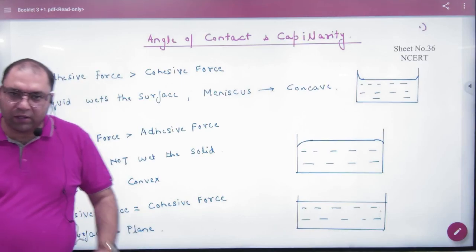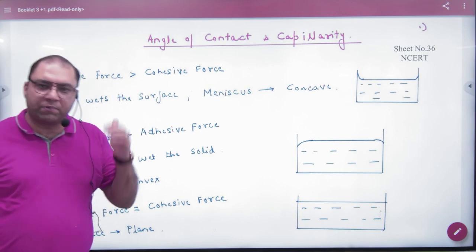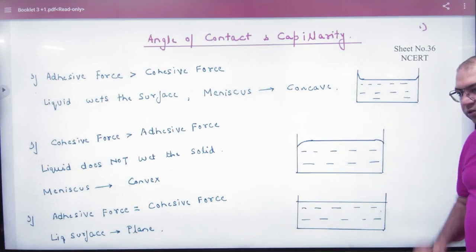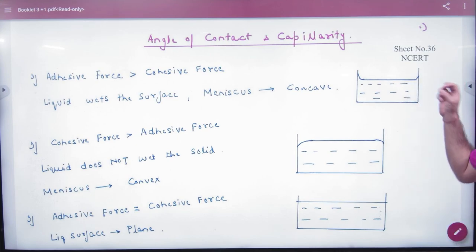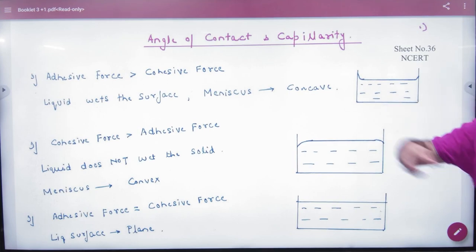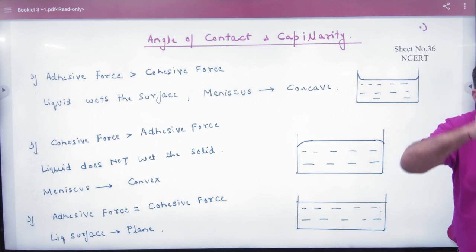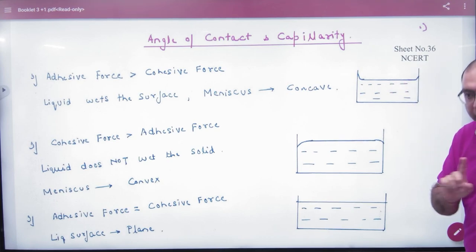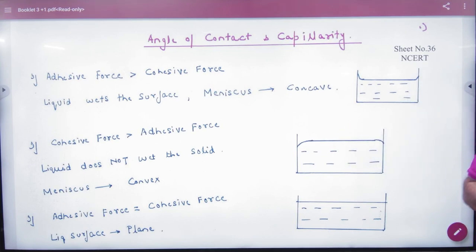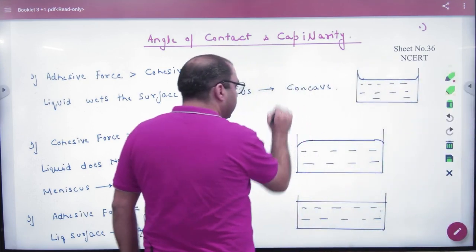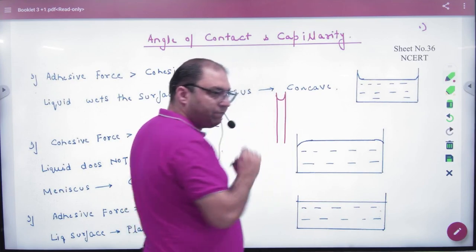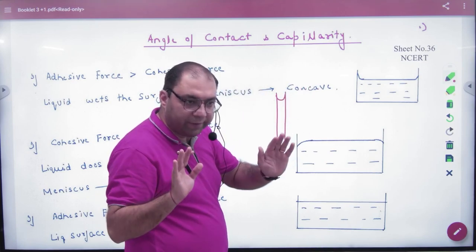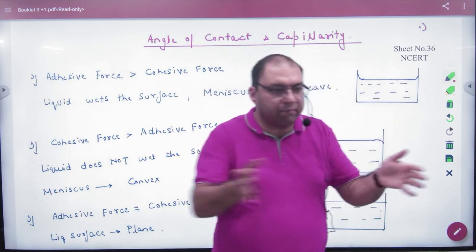Angle of contact and capillarity. Before starting this, I have told you that there are three meniscus types. The whole game depends on cohesive forces. In normal water, the walls of the container pull water up. Now the problem is that it is flat when not at the container wall. If the tube is kept very small, the meniscus will curve; if the tube is too big, there will be no chance — each side pulls liquid particles and it becomes flat.